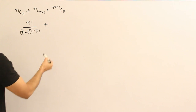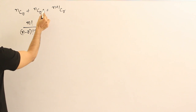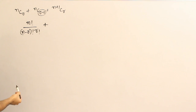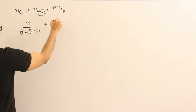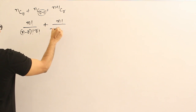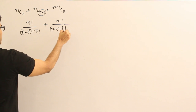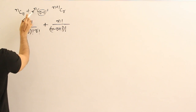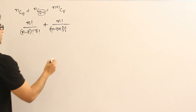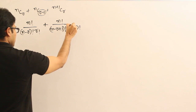I'm writing nC(r-1) as it is. If you don't know how to expand it, substitute r with x and then substitute back with r minus 1. So I'm directly writing it as n factorial divided by (n minus r plus 1) factorial, because n minus (r minus 1) gives n minus r plus 1, into (r minus 1) factorial.